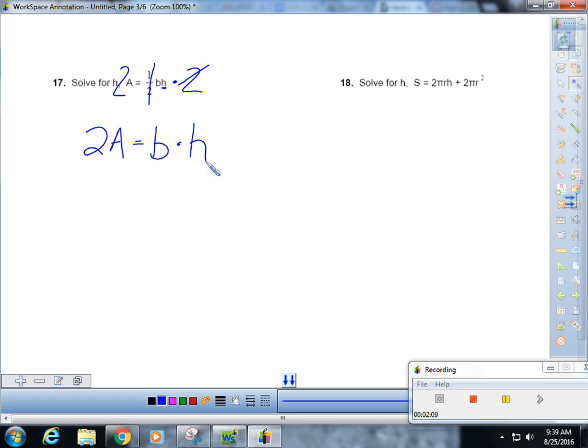From there, we're solving it for h. What's being done to the h? It's being multiplied by b. How do you get rid of multiplication? Division. B's cancel. You get h equals 2 times capital A over b, okay? This one's significantly harder. So I'm just going to rewrite it.